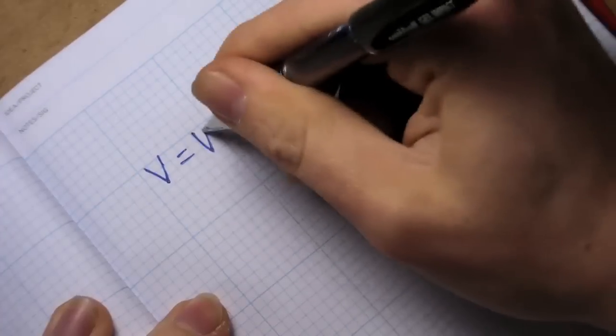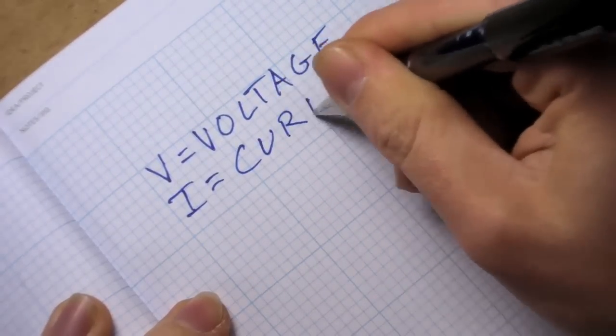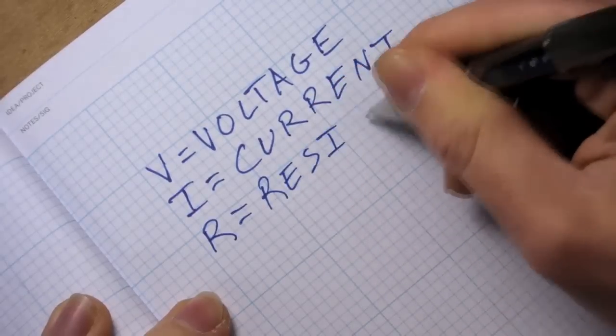Ohm's Law defines an important relationship between three very important electrical properties: voltage, current, and resistance.